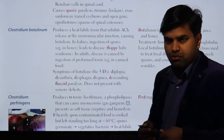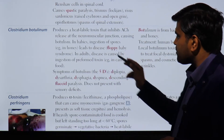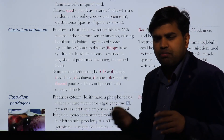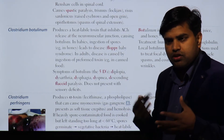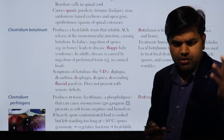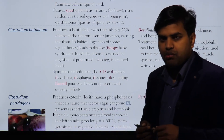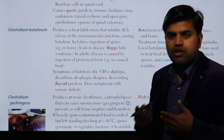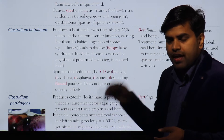In babies, ingestion of spores — for example from honey — leads to a disease called floppy baby syndrome. In many parts of the world, there is a custom of giving honey to newborns. The problem is honey may contain spores of C. botulinum. When ingested, the spore survives, germinates at body temperature, forms bacteria, releases botulinum toxin, and inhibits acetylcholine in the baby, leading to floppy baby syndrome.